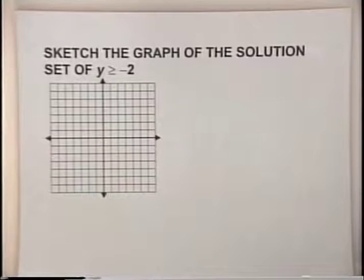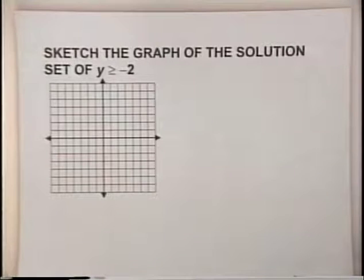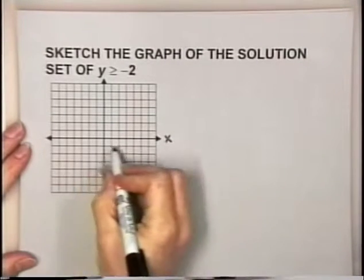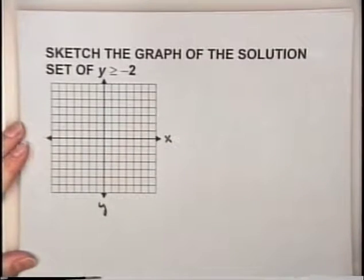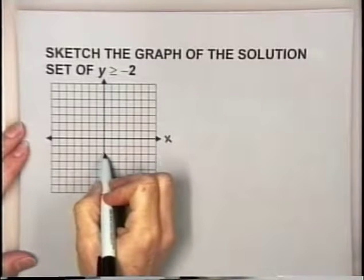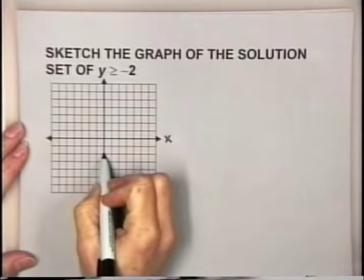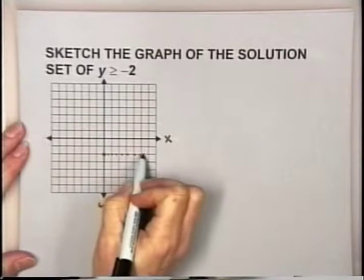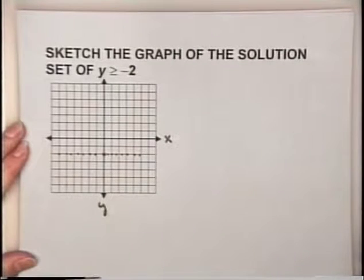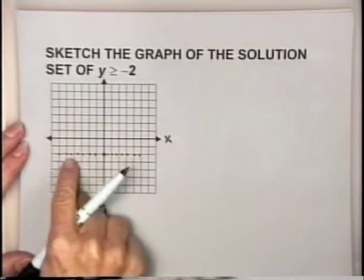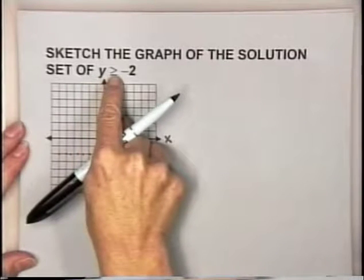Let's sketch the graph of the solution set of y is greater than or equal to negative 2. The horizontal axis is the x-axis and the vertical axis is the y-axis. First, let's find where y is equal to negative 2. If we come down on the y-axis, y is negative 2 at this point. Any point along this horizontal line has a y-value of negative 2, so the points on this horizontal line satisfy y equals negative 2.